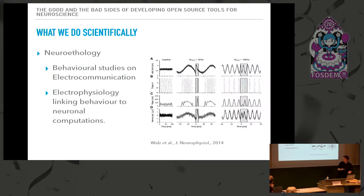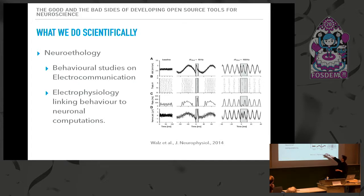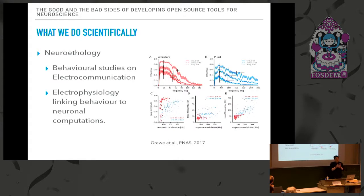The second part of our lab works with the brain itself. We record the activity of nerve cells that process information in response to something like a communication signal. We record action potentials and see how they encode communication signal information. Or we do system analysis — we play tricky white noise stimuli and figure out what range of frequencies they can encode and how.